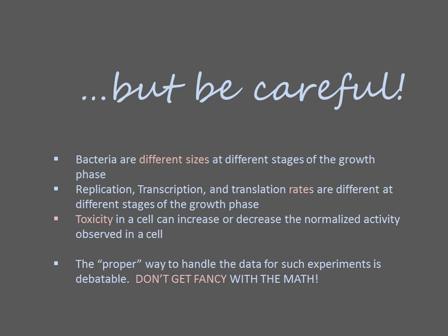It is tempting to do extensive data manipulation to control for deviations in your experiment. There are many notable examples of scientists performing elaborate corrections to their data that make small differences in original signal look like something far more dramatic. Such manipulation is highly discouraged since it is difficult to justify these corrections and they often misrepresent the reader. Best practice is to normalize for cell density and for signal strength against the standard, but do nothing else to the data. This does not guarantee that your data will not lie to you, so be careful and be cautious in your conclusions.